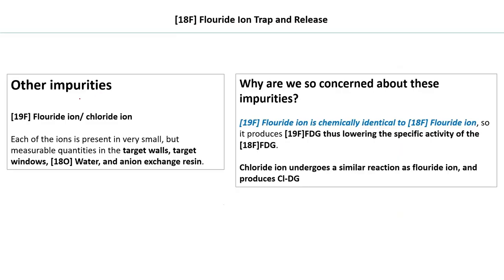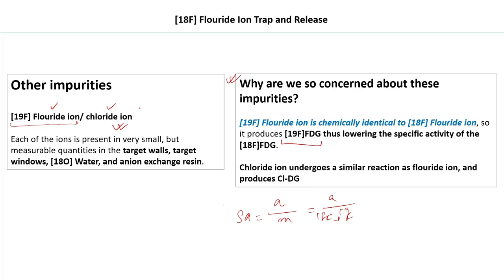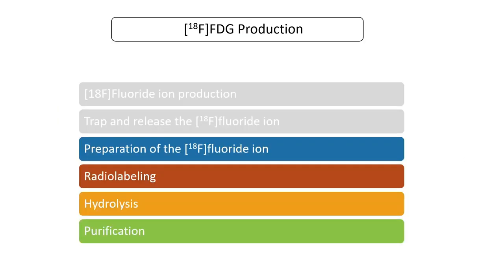Other impurities of concern are F-19 fluoride ion and chloride ion, present in small but measurable quantities in the target walls, target window, O-18 water, and anion exchange resin. F-19 fluoride ion is chemically very similar to F-18 fluoride ion, so it also produces F-19 FDG, which lowers the specific activity — since specific activity is activity per unit mass, having both F-18 and F-19 in the mass decreases it. Chloride ion undergoes similar reactions and produces chlorodeoxyglucose, reducing the yield of the final F-18 FDG product.